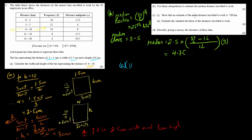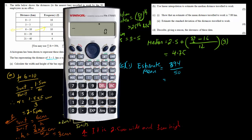For question (c1), we find the estimated mean. Normally we take midpoints and multiply by frequencies, but here the summation Σfx = 394 is already given. So the estimated mean = 394 ÷ 50 = 7.88. Always read the question carefully to see what information is already provided.